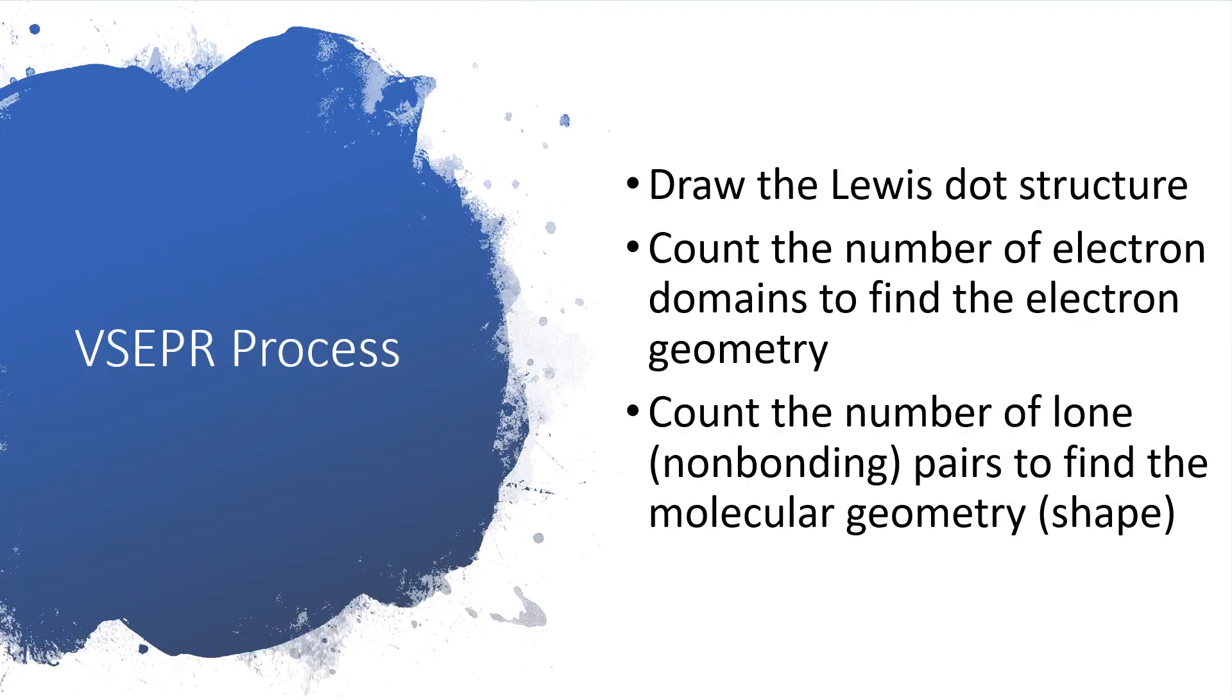The process of drawing VSEPR structures: first of all, you've got to have a Lewis dot structure to work from because that's where we're going to get the number of domains on the central atom. After you draw the Lewis dot structure, you're going to count the number of electron domains to find the electron geometry, and then you're going to count the number of lone or non-bonding pairs to find the molecular geometry. The molecular geometry or shape will be different from the electron geometry if lone pairs are present.